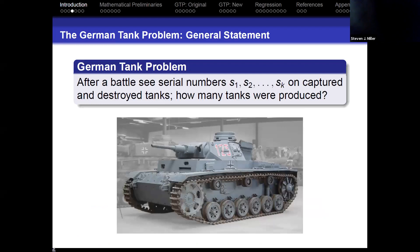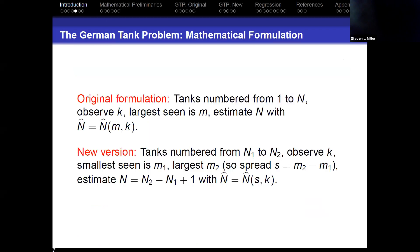Here's the general formulation. After battle, we observed the serial numbers on some captured and destroyed tanks: S1, S2, all the way up to Sk — so K tanks. The question is, how many tanks were produced? In the original formulation, we assumed that the tanks were numbered from 1 to N. We observed K tanks, the largest serial number is M, and we want to estimate N as some function of M and K. The new version, which I introduced a few years ago, assumes that we don't know what the lowest value is, and then we do the problem in terms of the spread — the difference between the smallest and the largest.